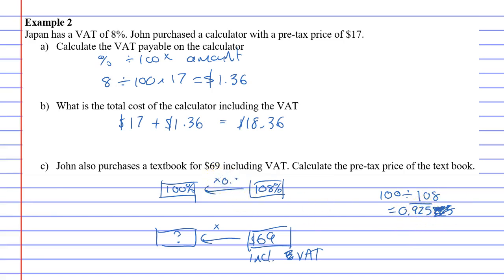So if I multiply by 0.925 repeater—that line meaning it repeats—it should take me from 108 to 100. I'm just going to check that now. Yep, it does that. So I'm going to do the same here, times 0.925 repeater.